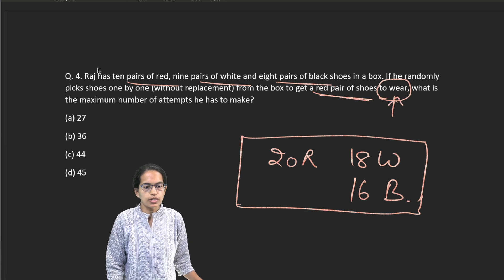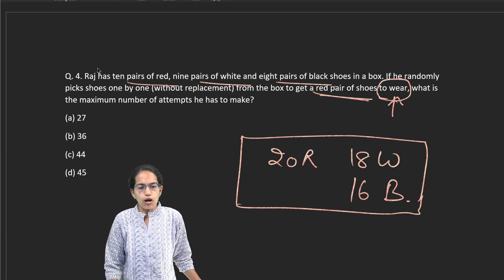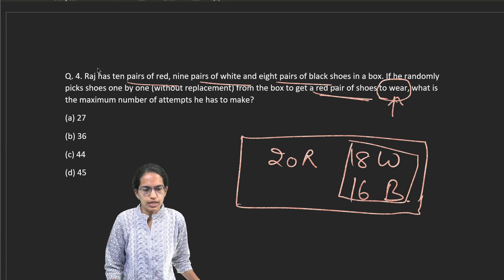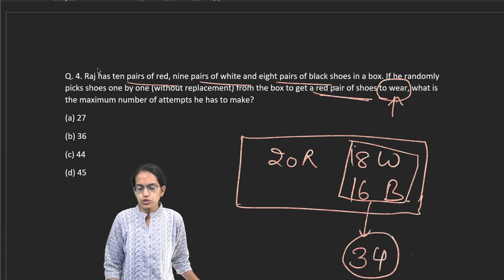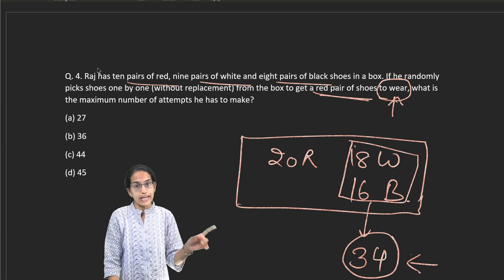What is very important here is the term 'to wear.' So how many shoes can I remove directly? That would be 34 shoes. I removed 34 shoes. After that, only I can have a red shoe.